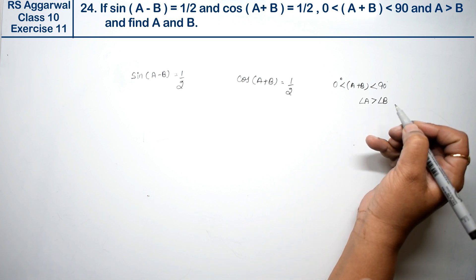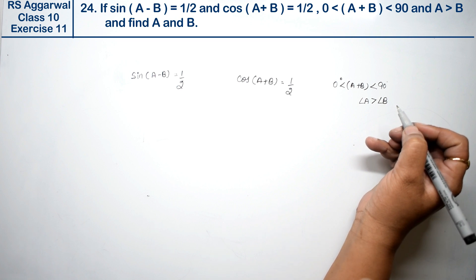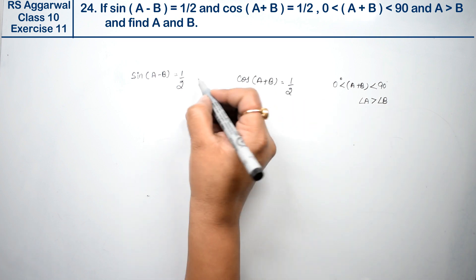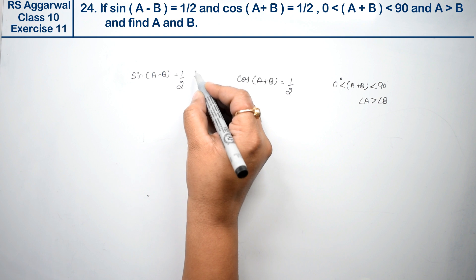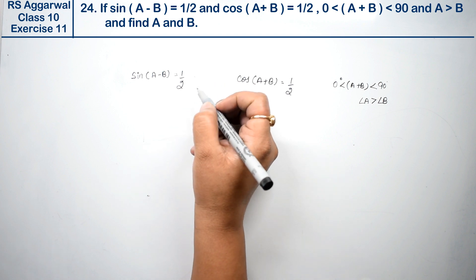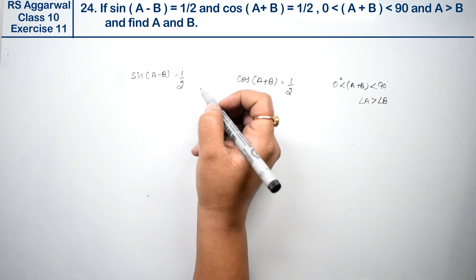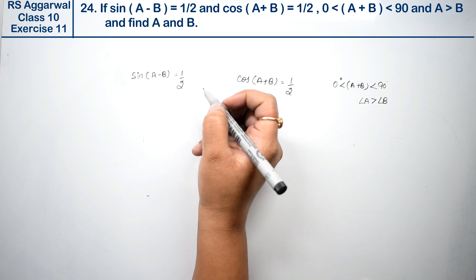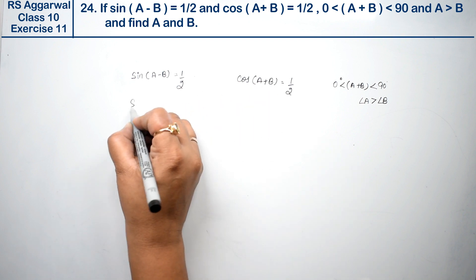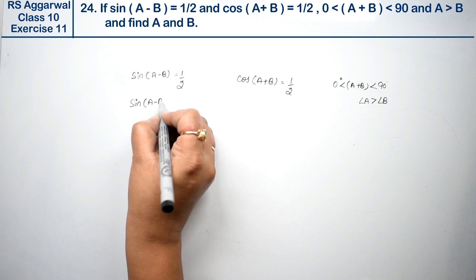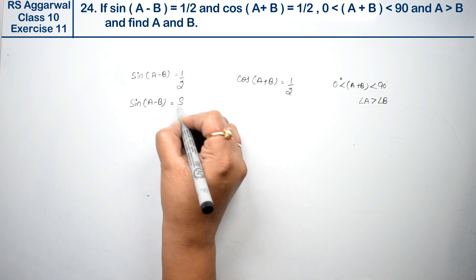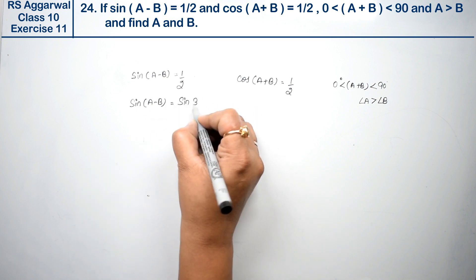We need to find angles A and B. We'll solve these separately. In the sine case, 1 upon 2 comes at 30 degrees, so we can write sin(A - B) equals to sin 30 degree.